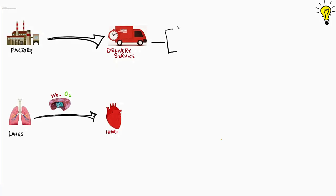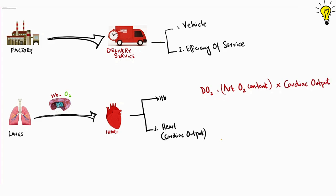Any delivery system has two key components: number one, the vehicle of transport, and number two, the efficiency of the company to be punctual. For heart, the vehicle of transport is hemoglobin carrying oxygen goods and efficiency of drive depends on the cardiac output and flow generated by the heart. So delivery of oxygen to tissues is arterial oxygen content times cardiac output. This is why anemic patients with low hemoglobin and reduced arterial oxygen content develop tachycardia and raise the cardiac output in order to keep the delivery of oxygen constant.